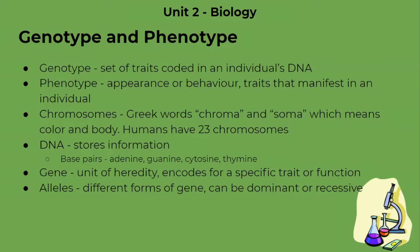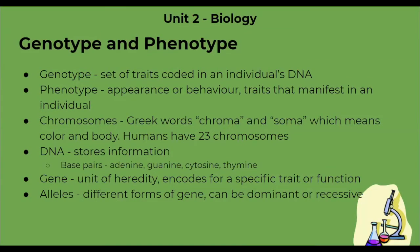Next, we have chromosomes. This word is derived from the Greek words chroma and soma, which means color and body. And as we know from biology class, humans have 23 chromosomes. DNA stores information, and it is what genes are made out of.